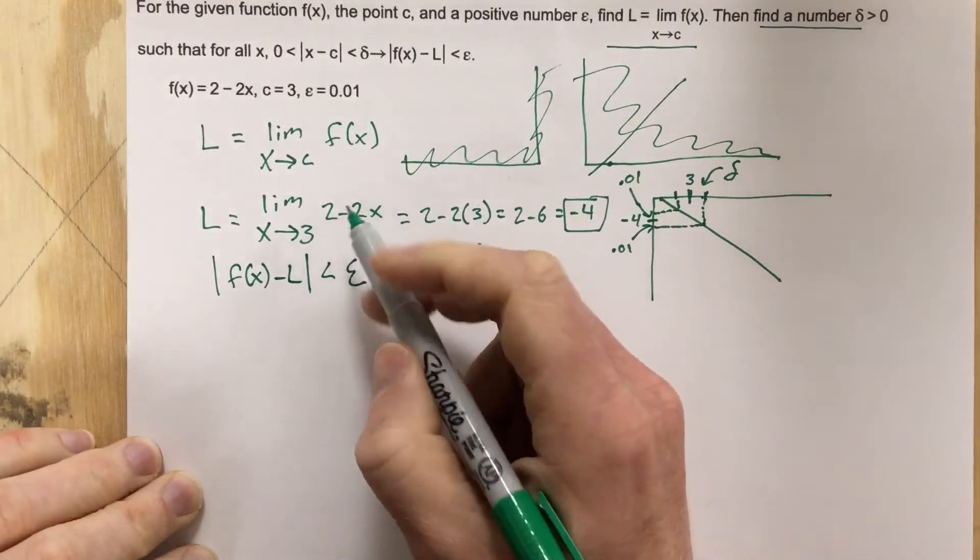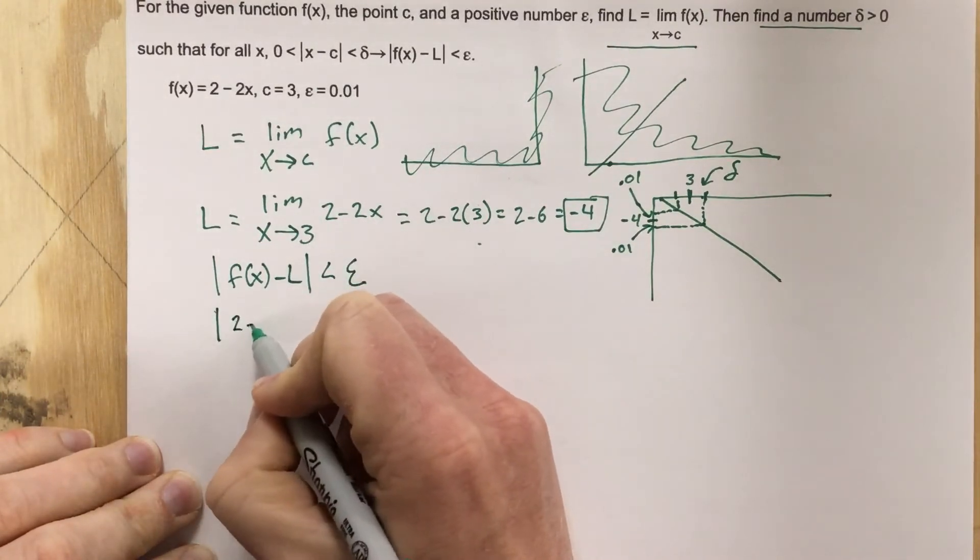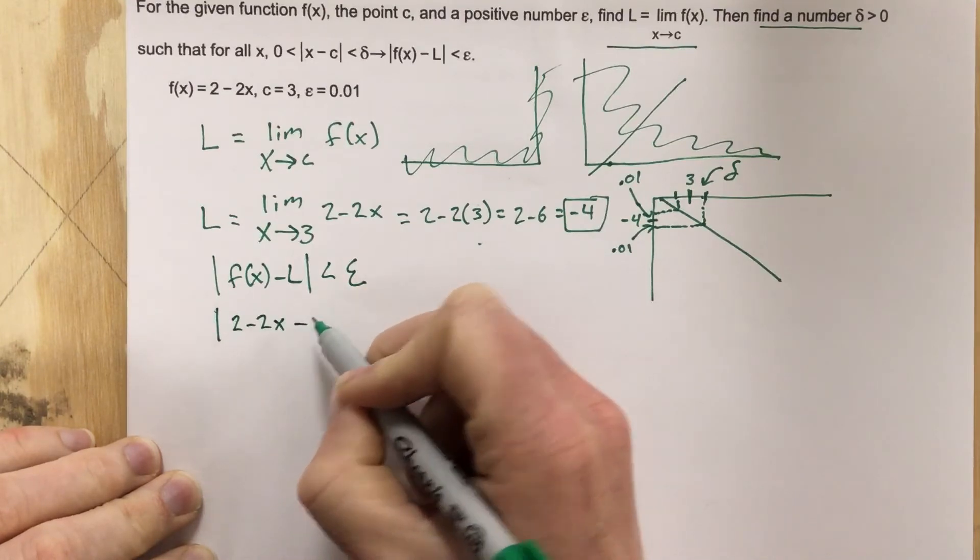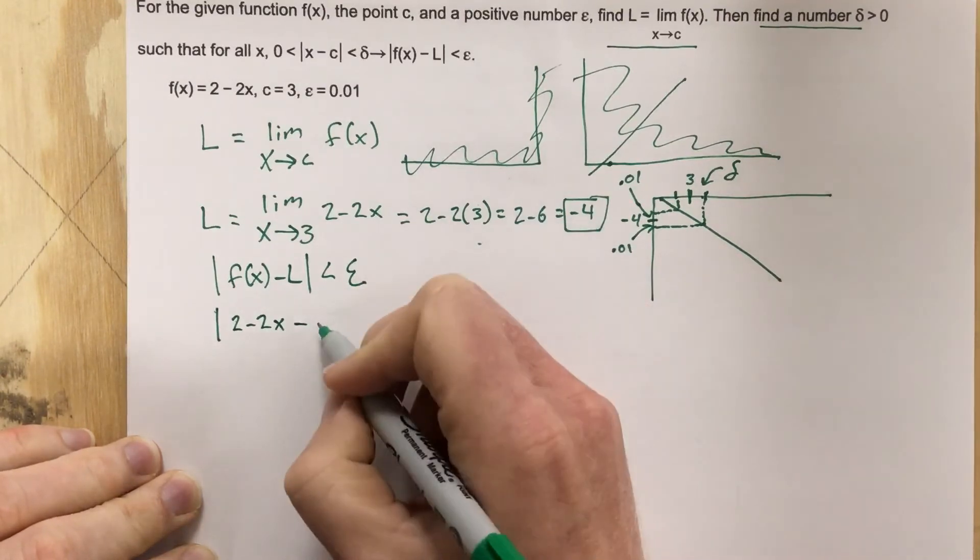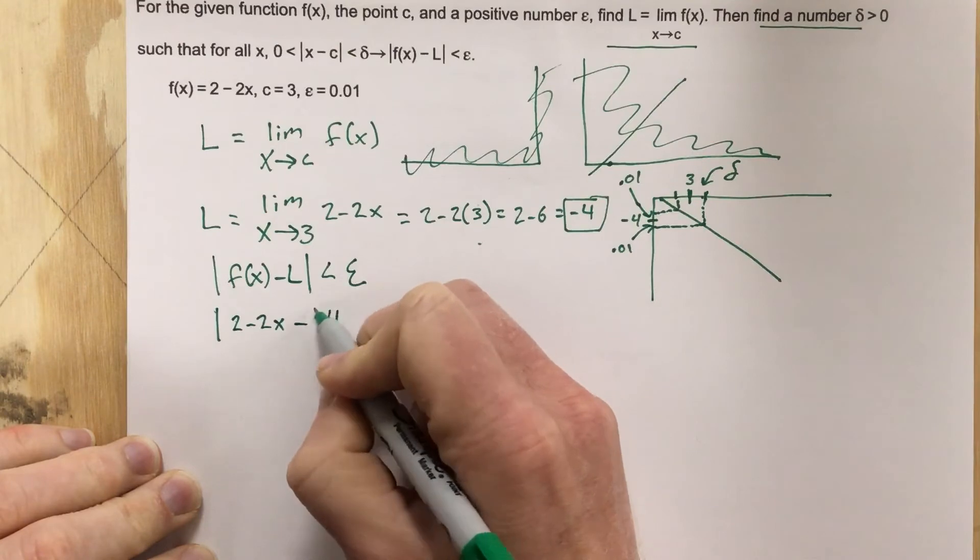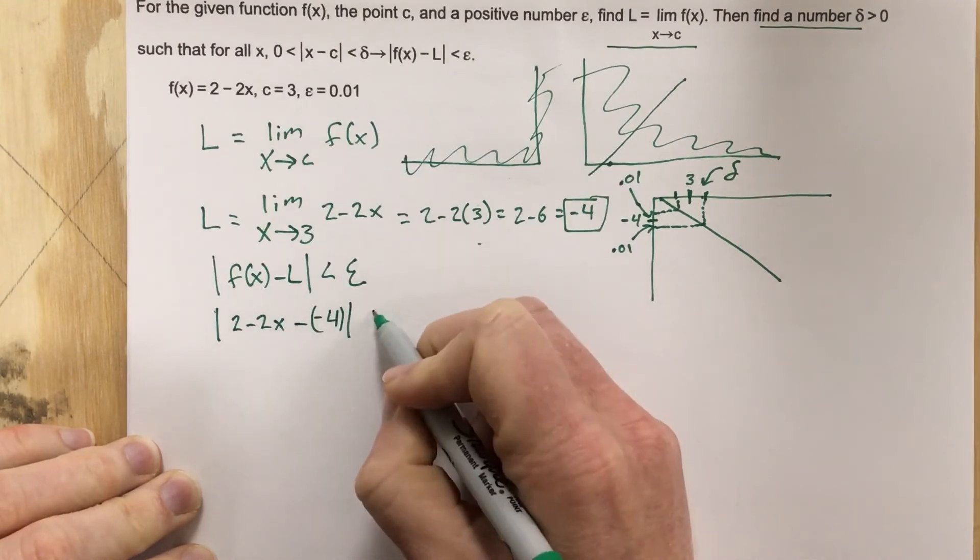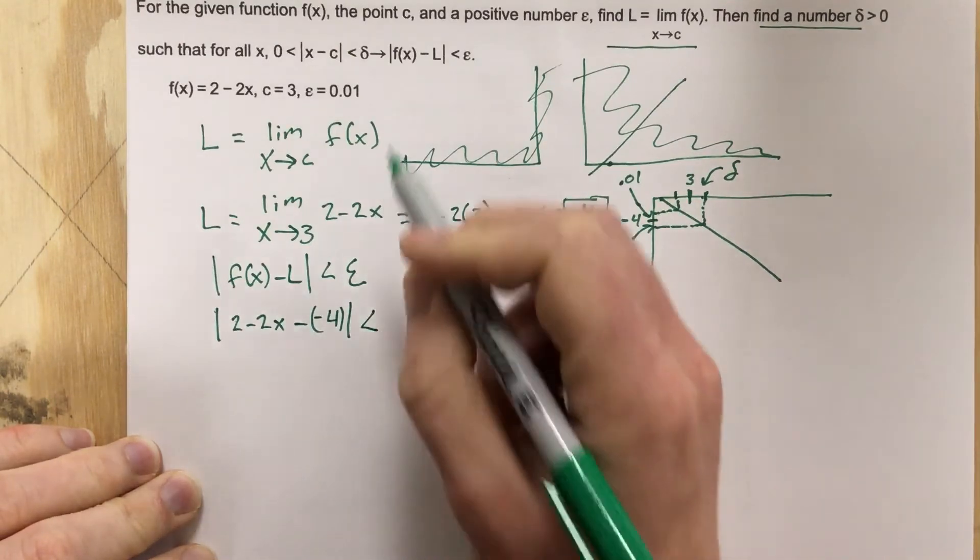So we're going to start with the absolute value of f of x minus L less than epsilon. So we say absolute value of f of x minus L is less than epsilon. So the function that we use is obviously 2 minus 2x minus L, which we just found is negative 4. So minus negative 4 is less than our epsilon value, which is 0.01.